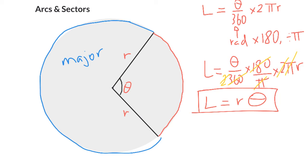If I did the exact same thing with the area of this sector here, I'd have A equals θ over 360, multiplied by πr². And once again, I would do the exact same thing. I would go and multiply by 180, and divide by π.